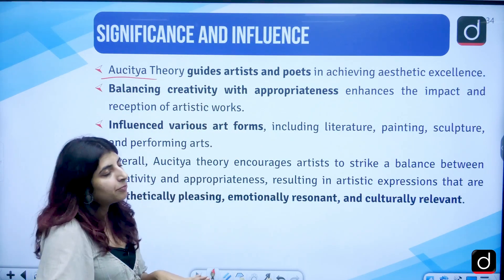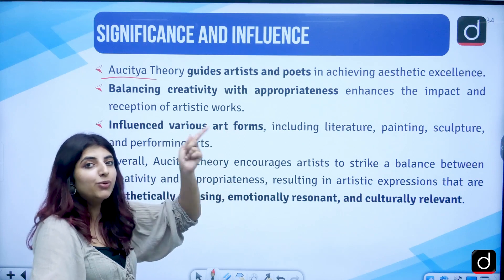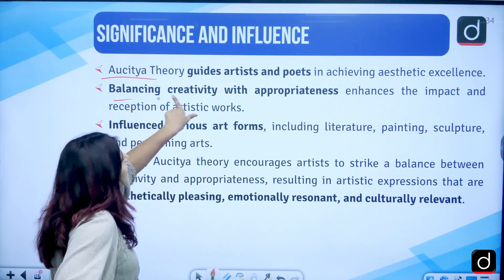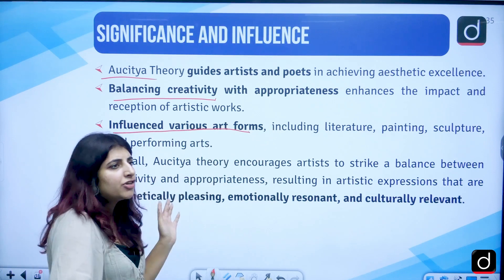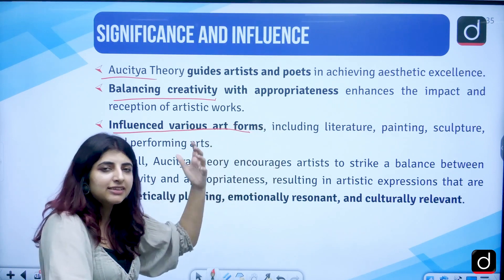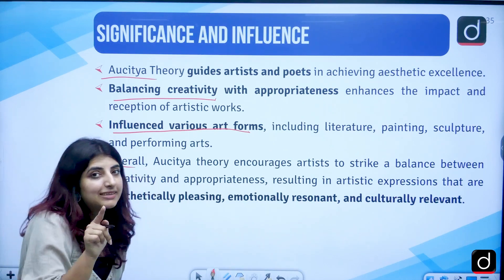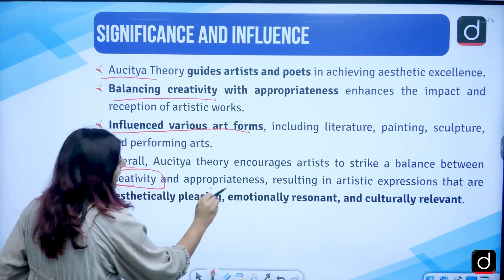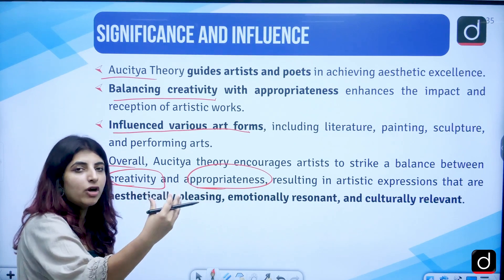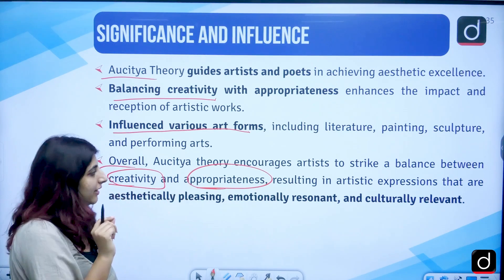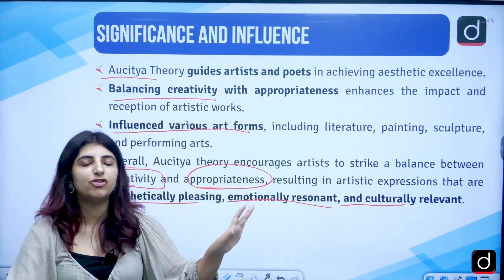Auchitya guides artists and poets even today — how you are supposed to maintain a balance between the norms which are already there, while also using your creativity. Balancing creativity with appropriateness and propriety, its influence spans various art forms — not just poetry, but literature, painting, sculpture, etc. This theory encourages artists to strike a balance between creativity and appropriateness, creating aesthetically pleasing, emotionally resonant, and culturally relevant artistic expressions.